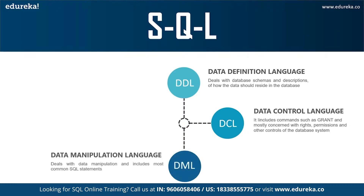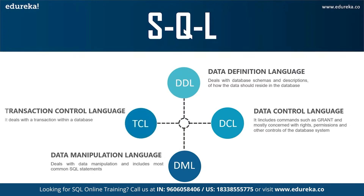The next command is DML, that is Data Manipulation Language. It allows you to access and manipulate data — it helps you to insert, update, delete, and retrieve data from the database. The Insert command is used to insert data into the table, Update is used to update existing data within the table, and Delete is used to delete records from the database. The final command is TCL, that is Transaction Control Language. It allows you to deal with the transaction of the database. A few of the TCL commands are Commit, Rollback, Savepoint, and Set Transaction. So these were the SQL commands.